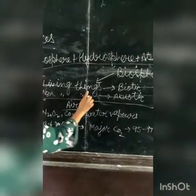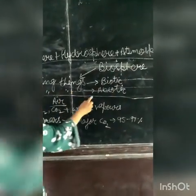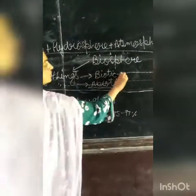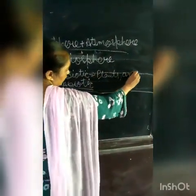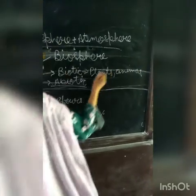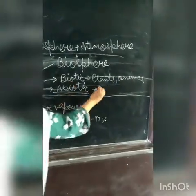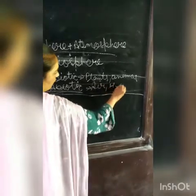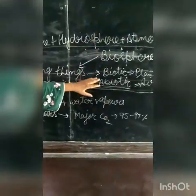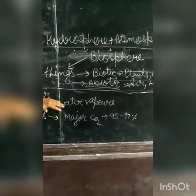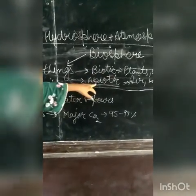The biosphere has two components: living things and non-living things. Living things are called biotic components, and non-living things are called abiotic components. First we will start from the abiotic component.